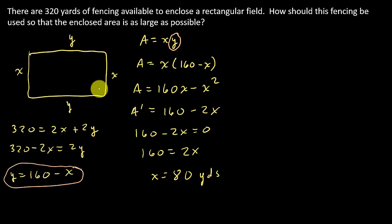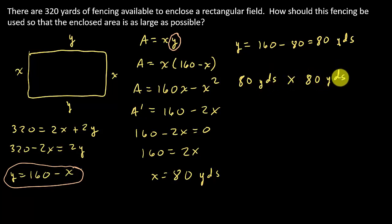So that's the dimension for x. Well, now I need the dimension for y. Well, what's y? y is equal to 160 minus x. So that's 160 minus x. And we got x to be 80. So that's 80 yards. So that's going to be 80 yards by 80 yards. So it's actually a square. It's going to maximize the area.